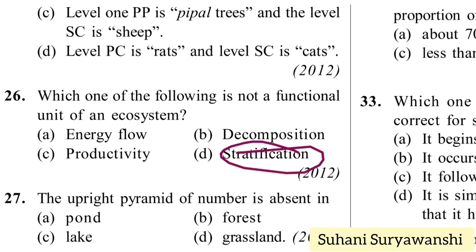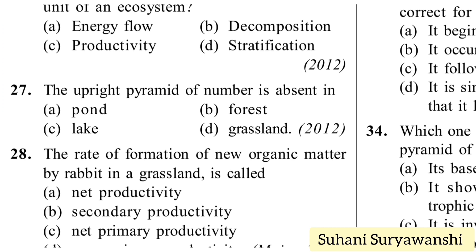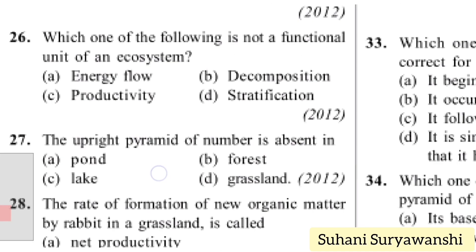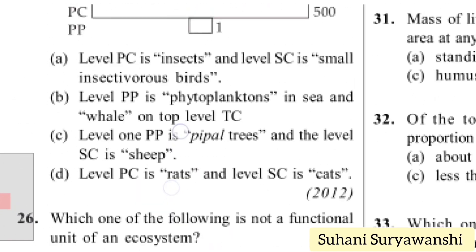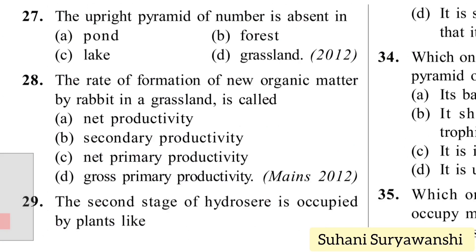The upright pyramid of number is absent in which ecosystem? Options: pond, forest, lake, or grassland. The answer is forest, because in a forest the single tree supports many insects and other organisms, making the pyramid spindle-shaped or irregular.